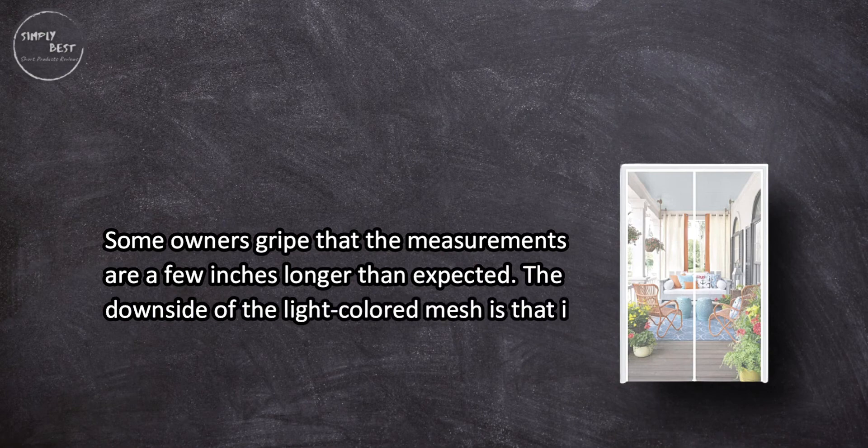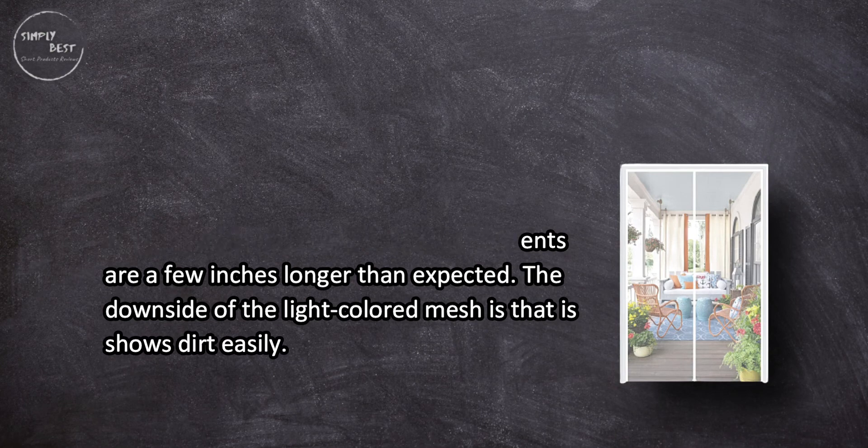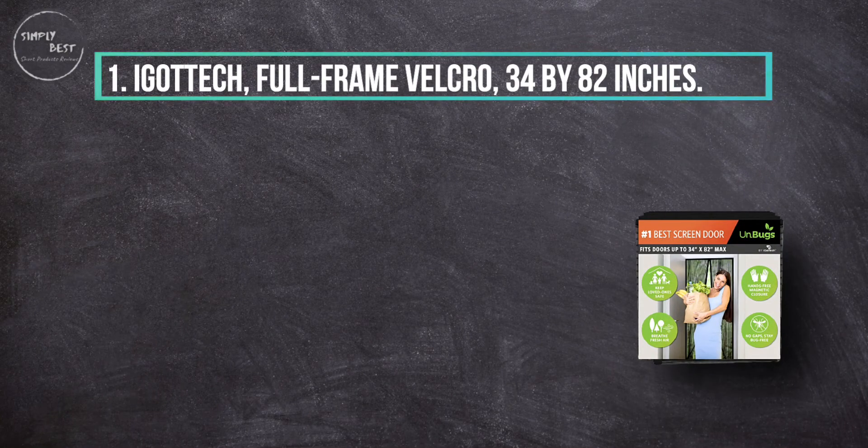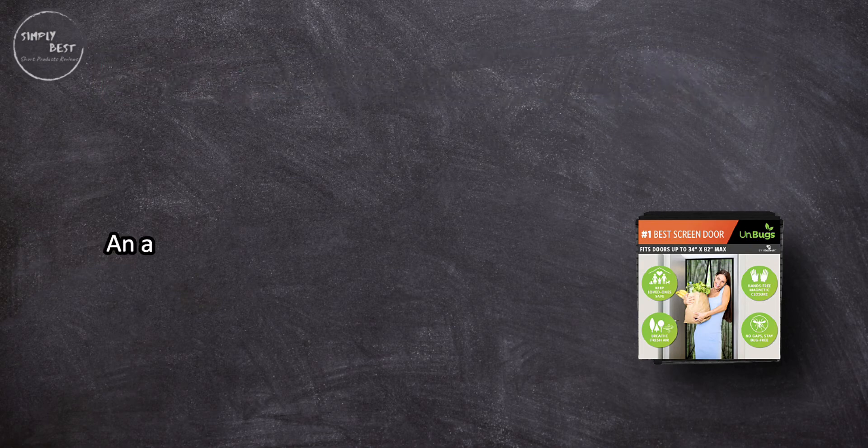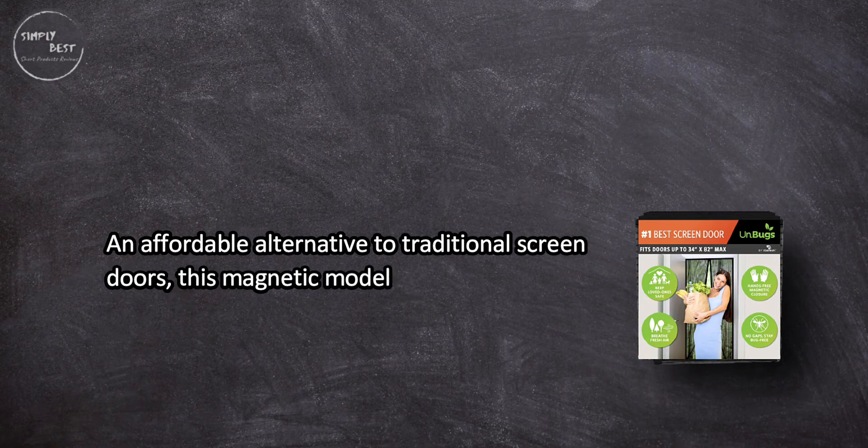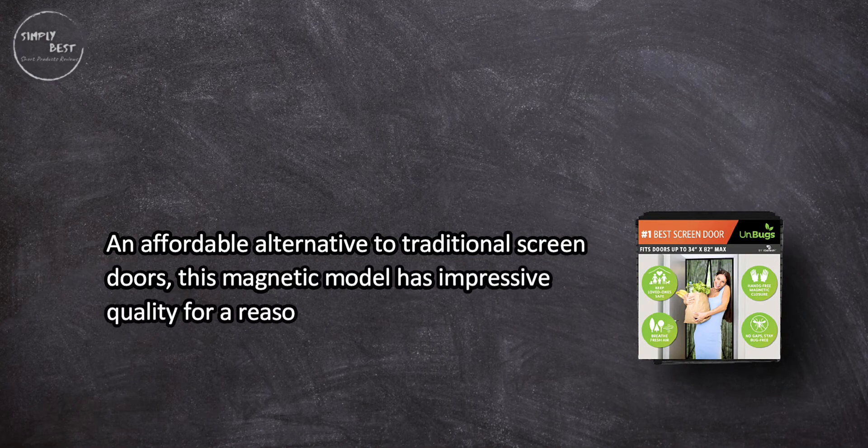At number one: iGotTech Full-Frame Velcro 34 by 82 inches. An affordable alternative to traditional screen doors, this magnetic model has impressive quality for a reasonable price. It's not too difficult to put up and is guaranteed by the company to keep bugs out.